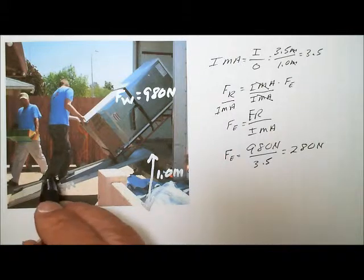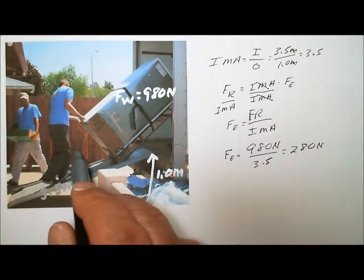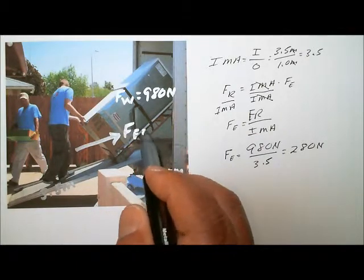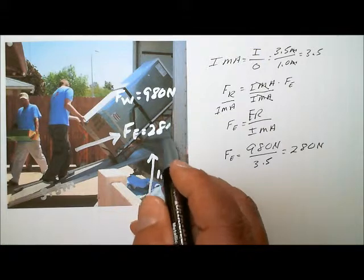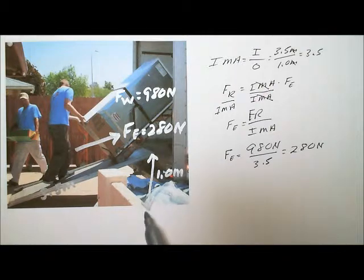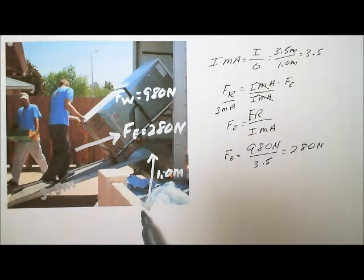In order for these guys to move this refrigerator up the inclined plane, they only have to apply an effort force of 280 newtons up the inclined plane to lift a 980 newton refrigerator. And that is why you use an inclined plane — it makes the work easier by decreasing the amount of force you have to apply to lift a larger resistance.